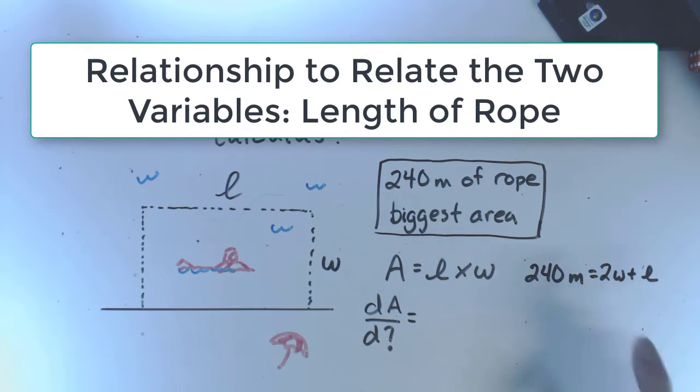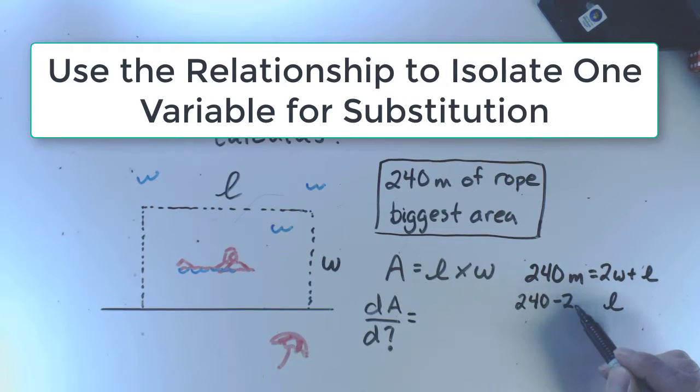What I can do is isolate L so that I can do a substitution. So 240 minus 2W, and I think this is going to be the substitution that makes it easiest. Sometimes you find out it is not, but in this case I'm almost sure it is.